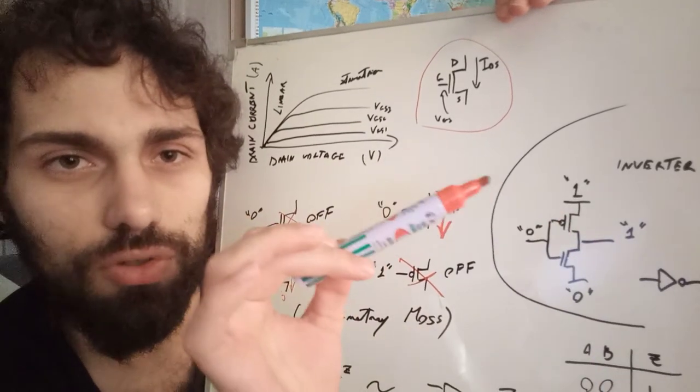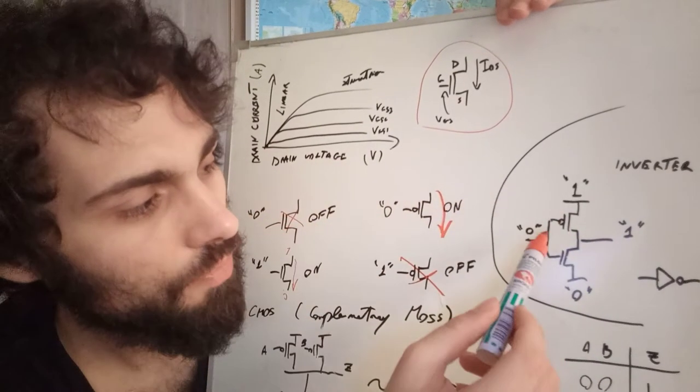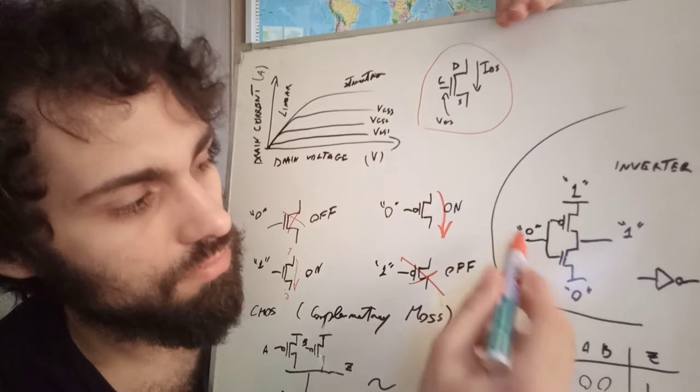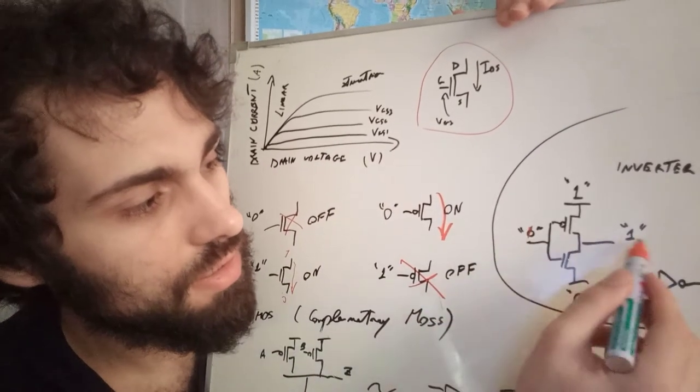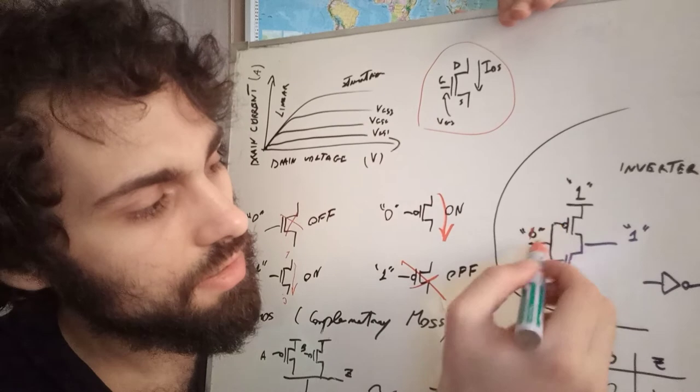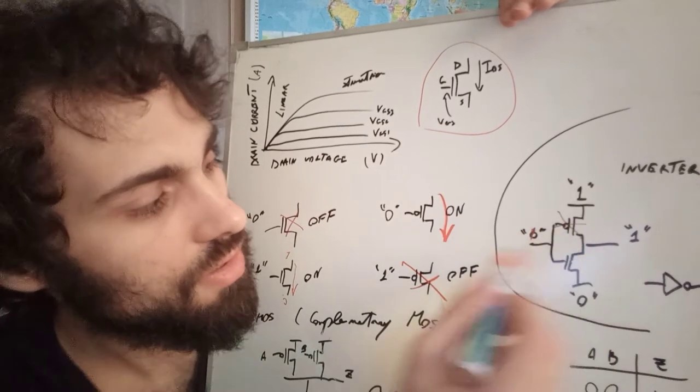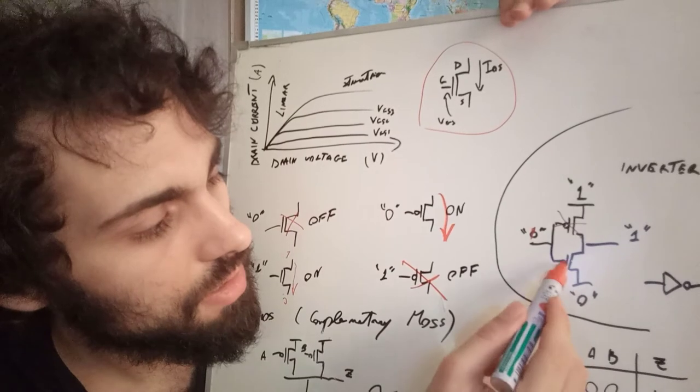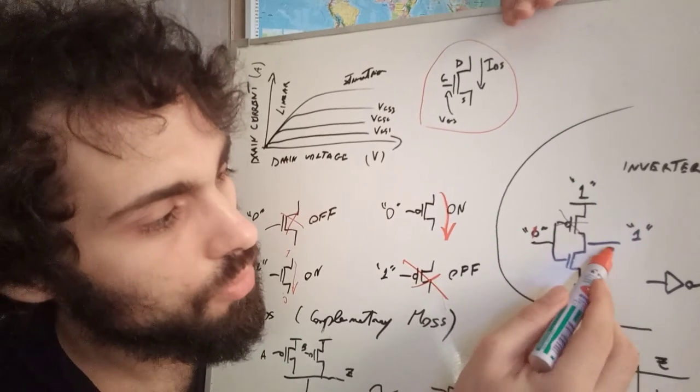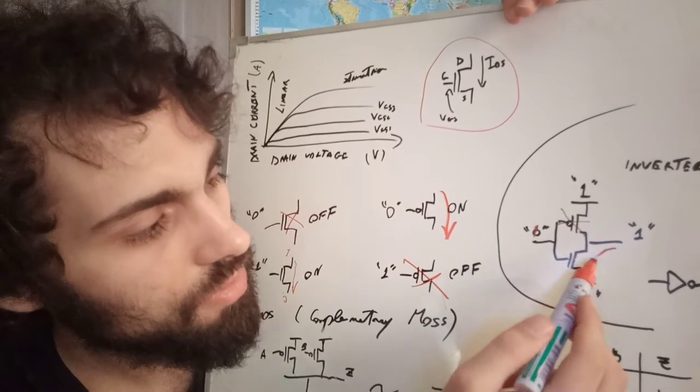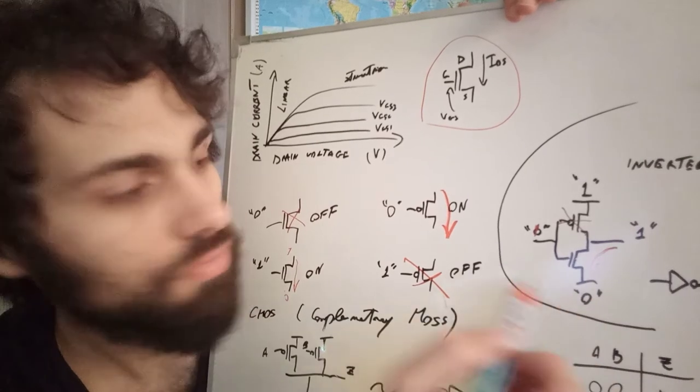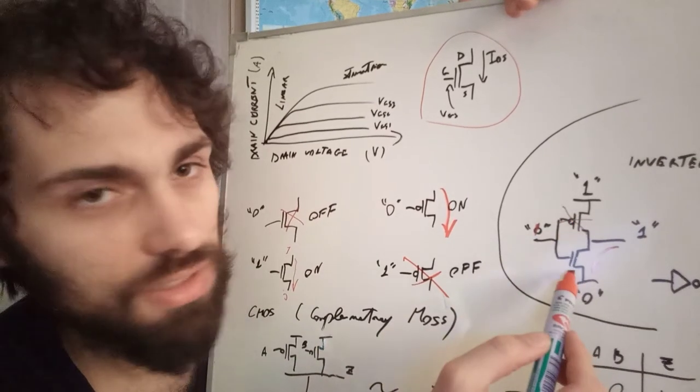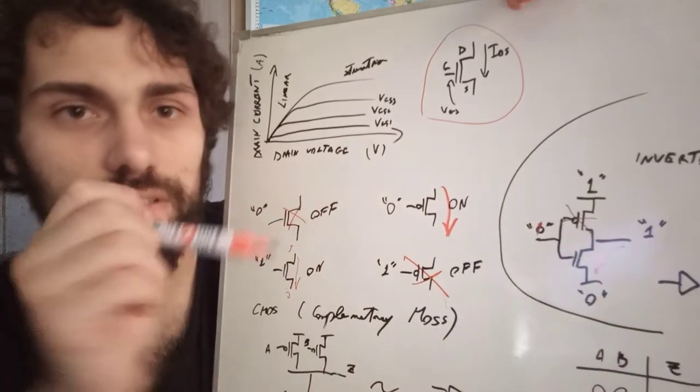The opposite is true if we put a one here - if there is a one, let's say a hypothetic one, then the PMOS will be disconnected as we saw here, and the NMOS will connect so it will pull down the output to zero. So this is a pull-up network, this is the pull-down network.